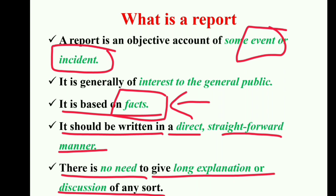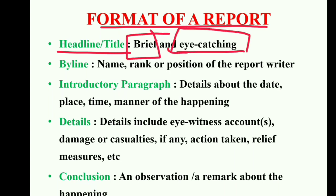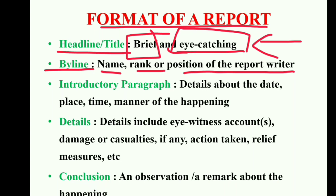Let's look at the format of a report. Generally, first we should write the headline or title. It should be brief and eye-catching. In the newspaper you must have seen that the headlines are very catchy — because of the headline we read the entire report. Next is the byline. In the byline you have to mention the writer's name and rank or position. Usually in rank you should write 'staff reporter' or 'chief reporter.' If it is not given in the question, you can write 'staff reporter.'